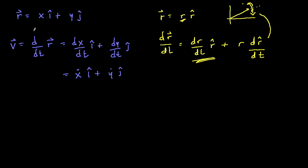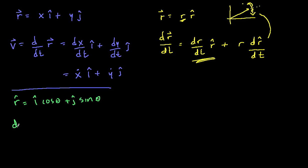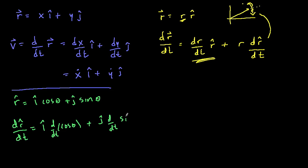In order to do that, let's go back to what r-hat was from the previous section. r-hat is equal to i-hat times cosine theta plus j-hat times sine theta. So let's compute dr-hat/dt. I've basically converted this polar unit vector into Cartesian unit vectors. Since the Cartesian unit vectors don't change in time, we can write this as i-hat times d/dt of cosine theta plus j-hat times d/dt of sine theta.